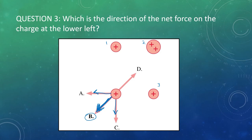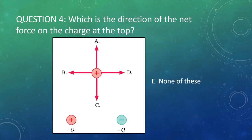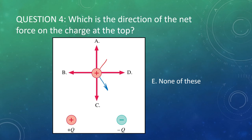Now same question — what is the direction of the net force but this time on the charge at the top? There's a negative charge below — opposites attract — so it's going to be pulled down and to the right. There's also a positive charge the same distance away that's going to push it up and to the right. Combining up-right and down-right, the overall answer is to the right — answer D.